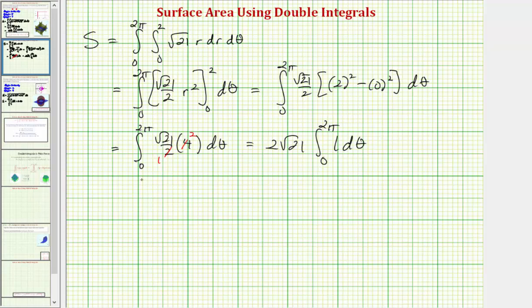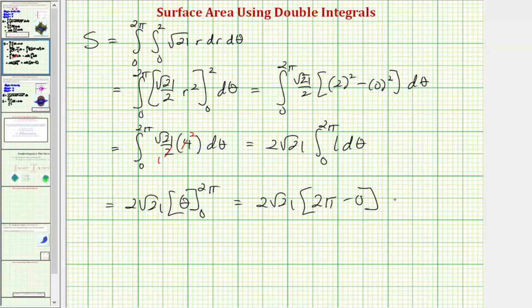So we have two square root of 21 times the integral from zero to two pi of one d theta. The antiderivative of one with respect to theta is just theta. So we have two square root of 21 times the quantity two pi minus zero, meaning the exact surface area is equal to four pi square root of 21 square units.